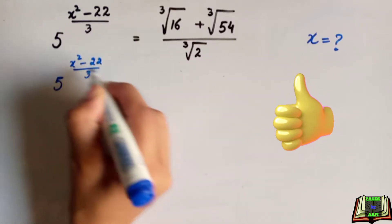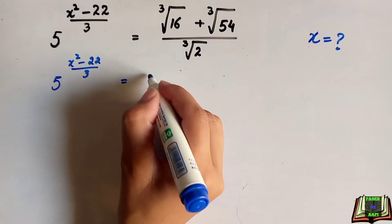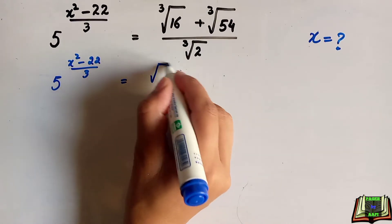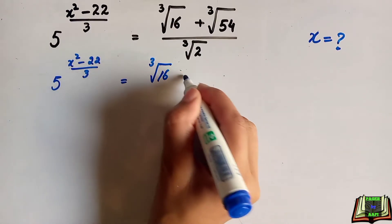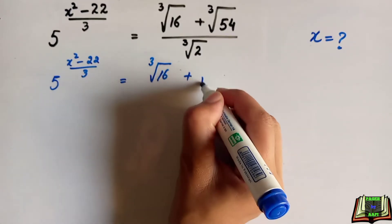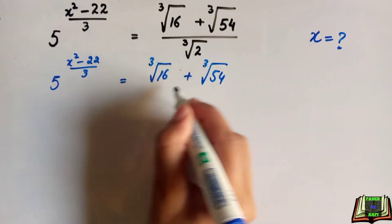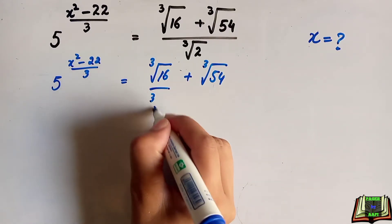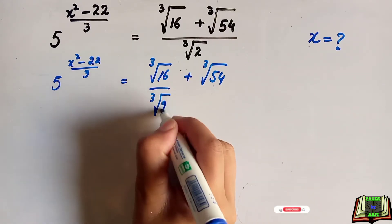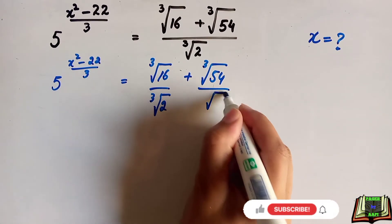In the first step, we keep 5 to the power x squared minus 22 divided by 3 as it is, and then separate cube root of 16 and cube root of 54 divided by cube root of 2 individually.